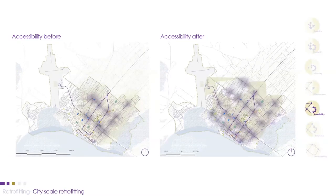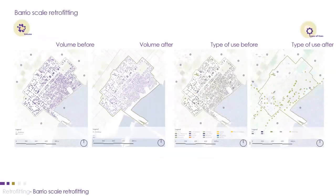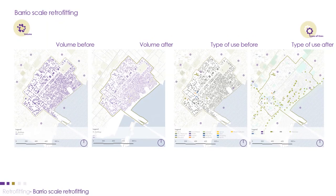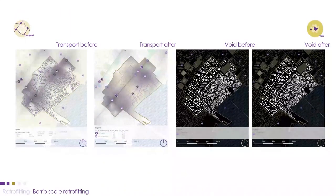Since we integrated new transportation nodes, the accessibility map has also improved dramatically. After the city scale retrofitting, we did the retrofitting for barrio 11. The volume map shows we relocated a significant amount of volumes from the flood zone to safer zones, with newly added functions. The new transport map of barrio 11 shows newly added road spines connecting fragmented routes together with new transportation stops.